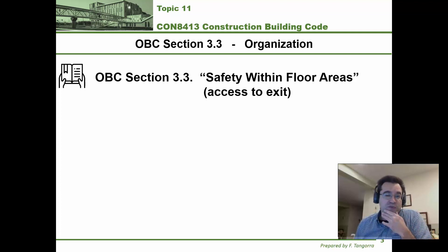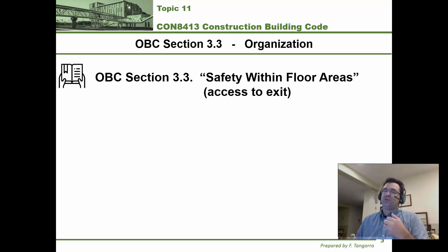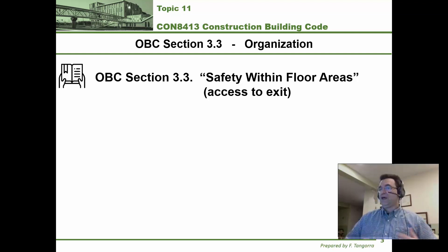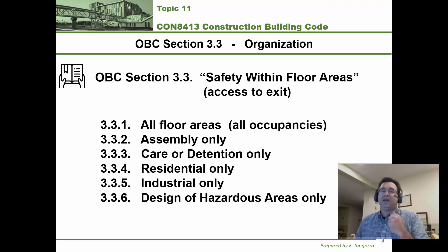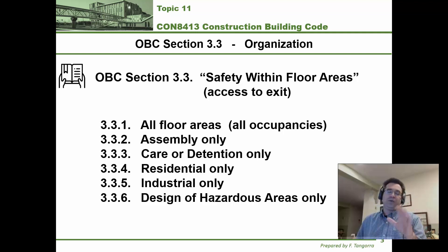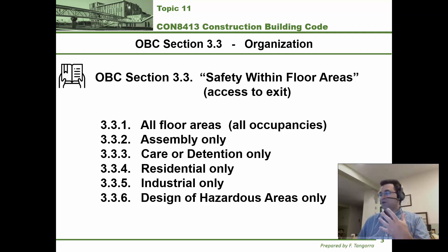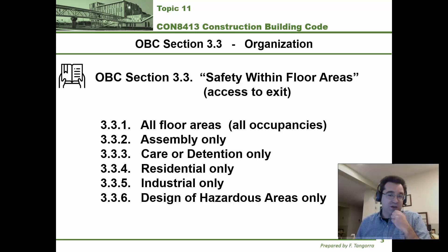This is how section 3.3 is set up in the building code. If you flip to it, section 3.3 is called 'Safety Within Floor Areas' and is all about accessing exits. It's organized so that subsection 3.3.1 covers all types of floors. For specific occupancy types you look at different sections: assembly is under 3.3.2, care and detention under 3.3.3, and so on up to 3.3.6, which is design of hazardous areas — that's more like your F2 and F3 occupancies.